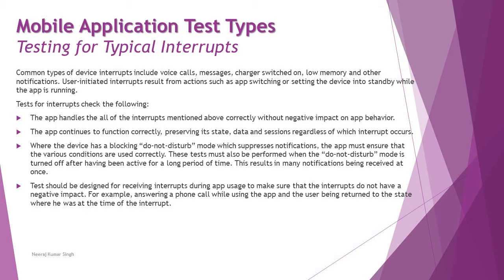We are talking about testing for typical interrupts. There are so many interrupts which can pop up with respect to a particular application — many inbuilt apps and other apps which can pop up on the screen, specific to the device as well, which can definitely be an obstruction to app usage. For example, when your battery goes down, you get a pop-up saying you want to turn on saver mode, or that you have 20% or 10% remaining.